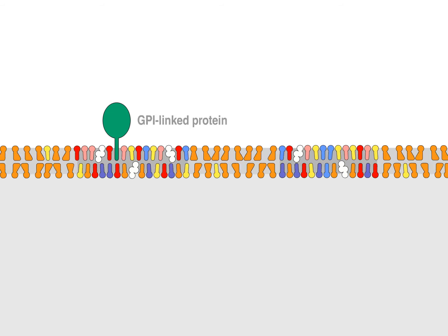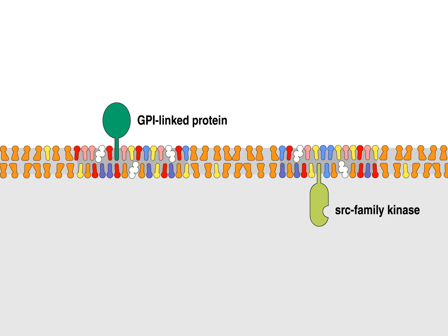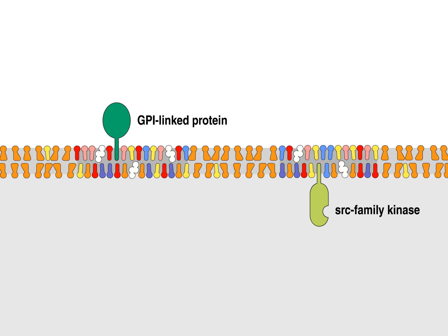Some types of cellular proteins are found associated with lipid rafts. Proteins with GPI anchors and proteins like Src family kinases, which are modified by the addition of fatty acids that allow them to bind to the cell membrane, are both found to be associated with lipid rafts.